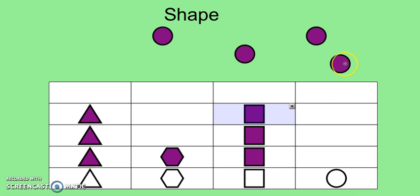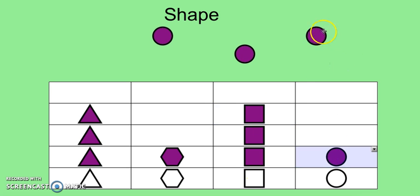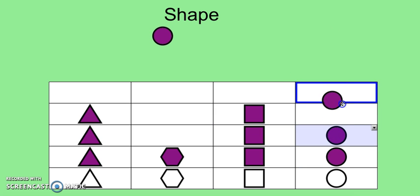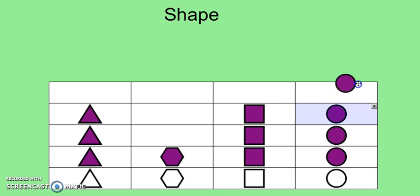Now let's group our circles. One, two, three, four. There are four circles. All of the shapes were the same color, but this time we grouped them by what shape they were: triangles, hexagons, squares, and circles.